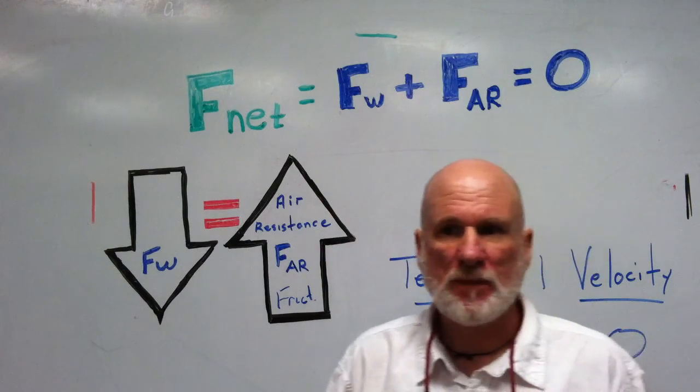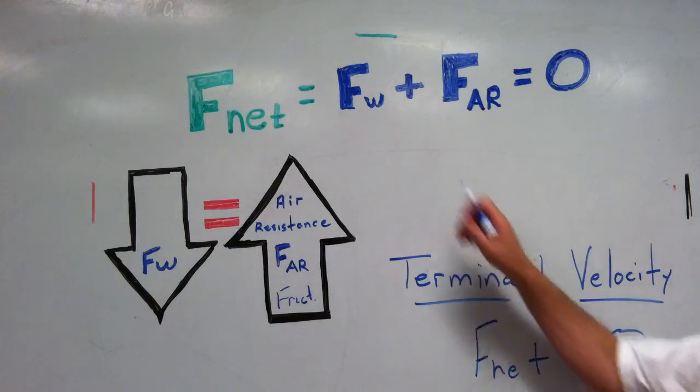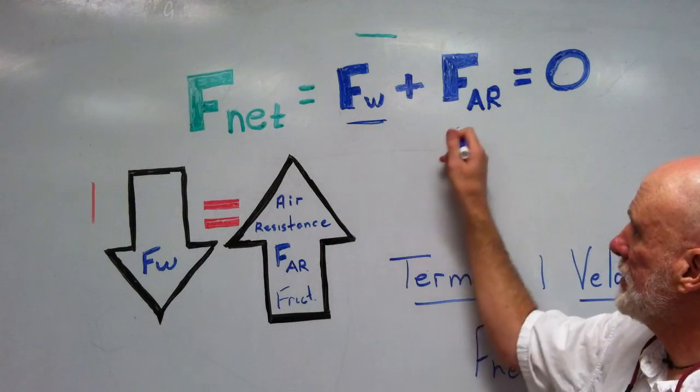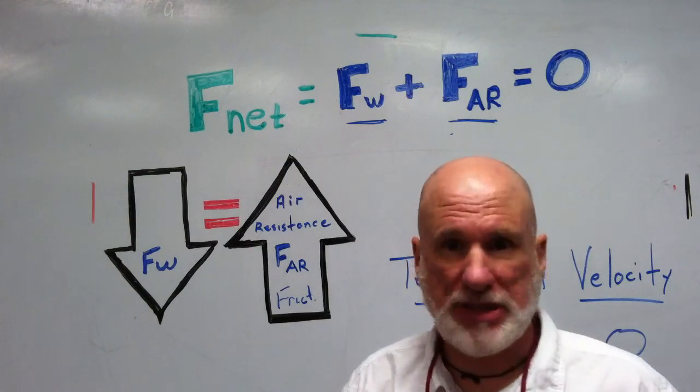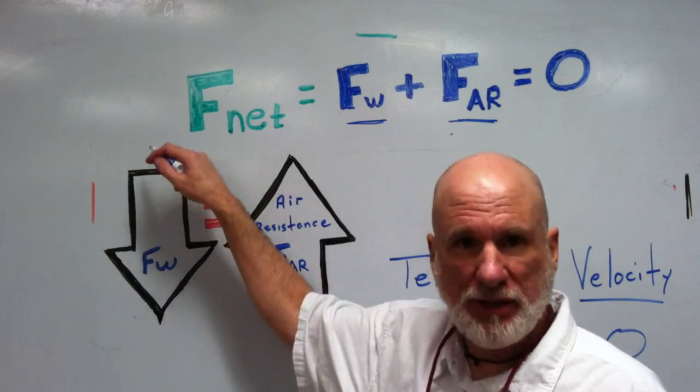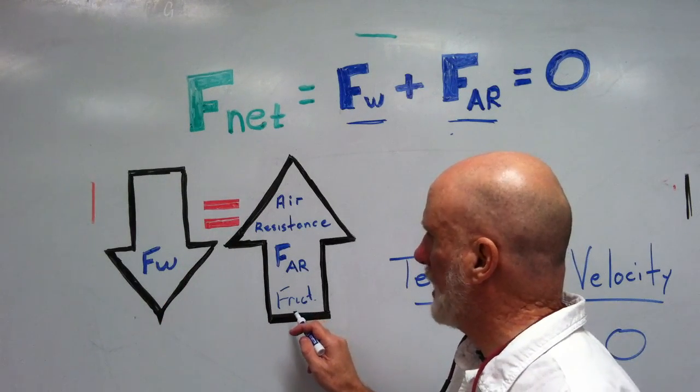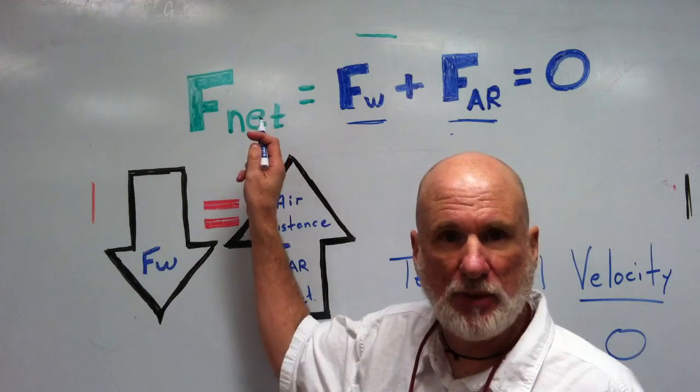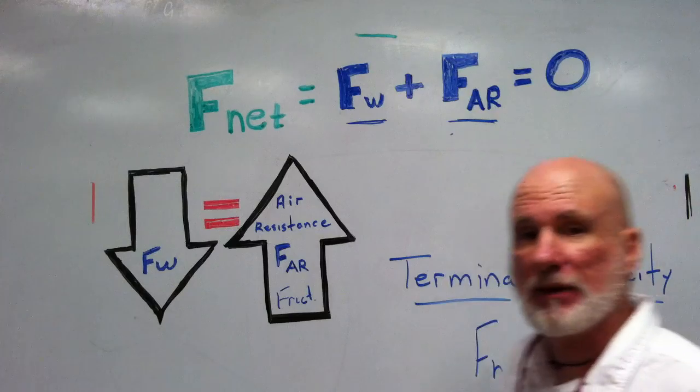So when those are equal my net force is zero. When my weight and my air resistance are equal and opposite. Direction of the motion is positive. The direction of the air resistance would be negative, it would be opposite. Plus minus, equal and opposite. It would be zero.